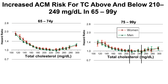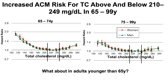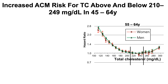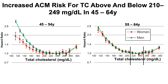For adults younger than 75, a similar trend is seen: 210 to 249 was associated with the lowest risk for both men and women, with increasing risk of death for all causes at lower and also higher levels of total cholesterol. The same holds for adults younger than 65 and for the 45 to 54 age group — 210 to 249 remains optimal, with lower cholesterol appearing to carry higher risk than higher cholesterol.